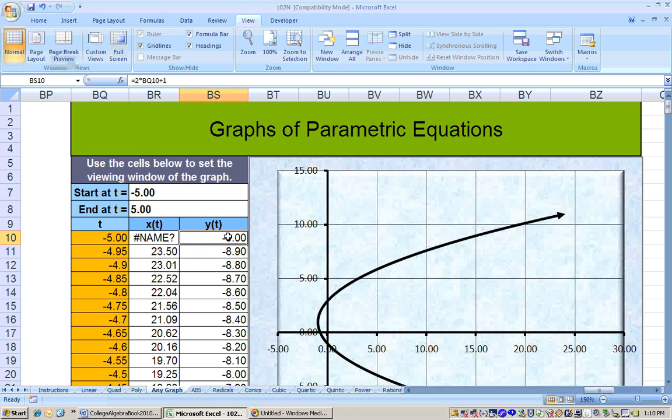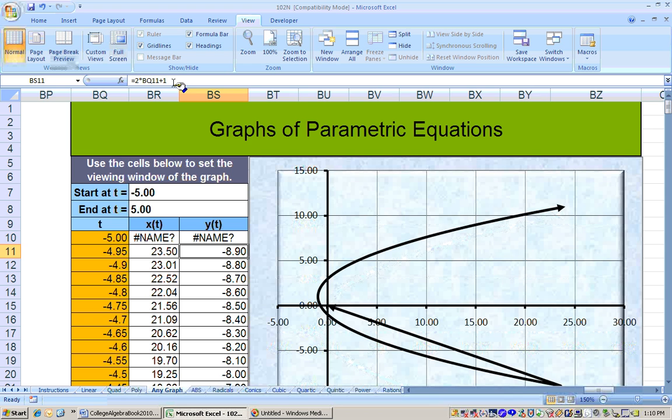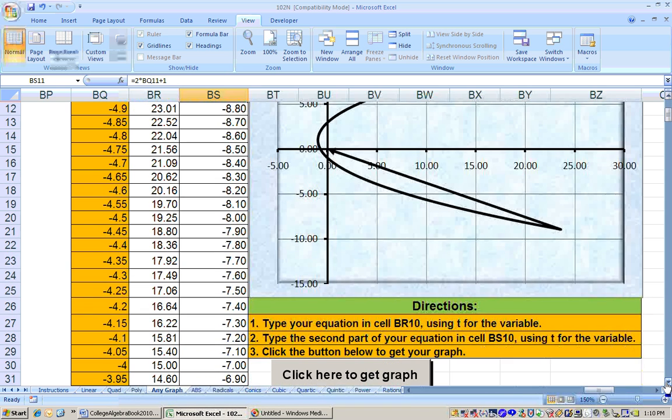And right here, the function was, now I think this one, to tell you the truth, was minus 1. Let me fix that up. And then this one was 2t plus 1. So I'll type that in here, 2 times t plus 1. But remember to use t's, not x's. And then what we need to do is click the button right here to get the graph.